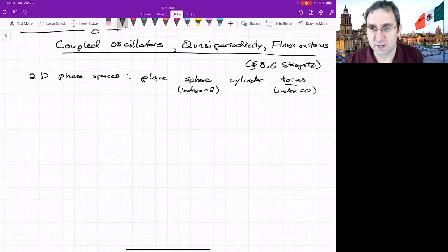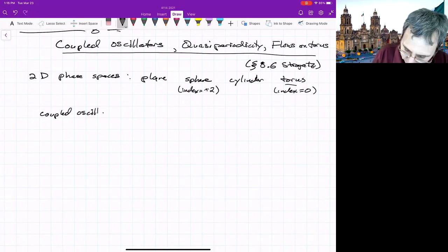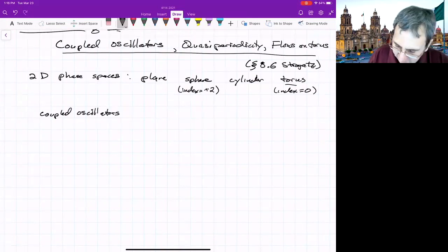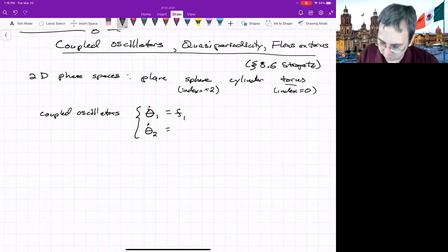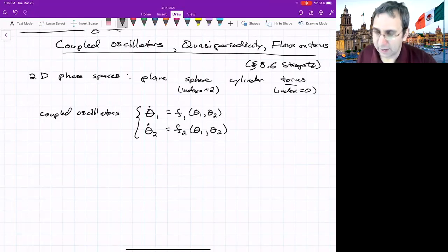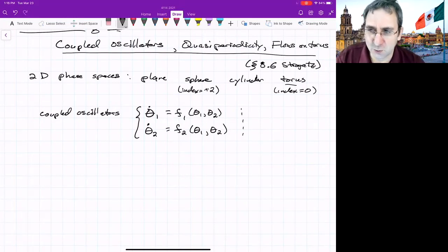When we're talking about coupled oscillators, instead of writing x dot and y dot, now we're thinking of theta one and theta two, and they will change in time. We'll write theta one dot is some function of theta one and theta two. Theta two dot is some other function, f two of theta one and theta two. And the requirement for this to be a flow on the torus is that f one and f two are two pi periodic in both their arguments.